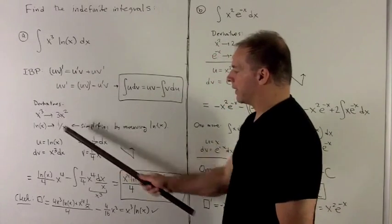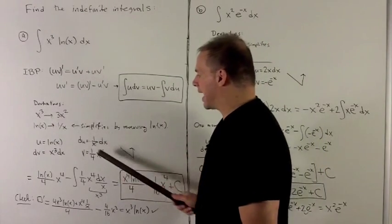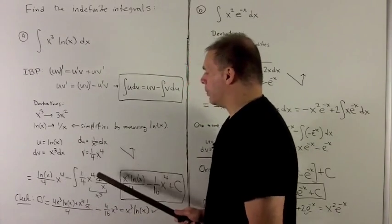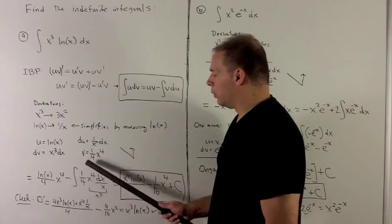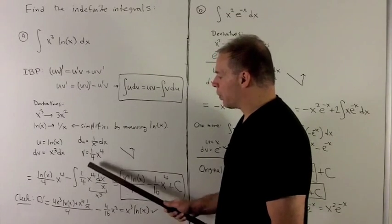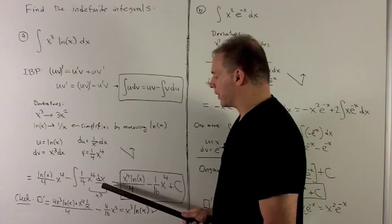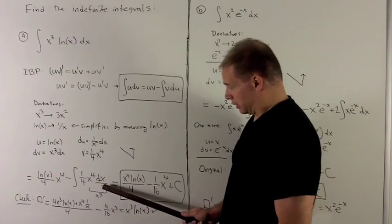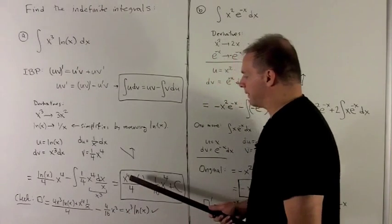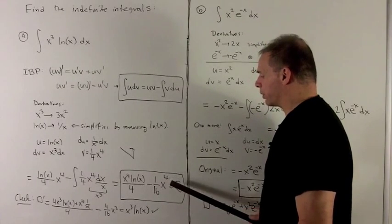The rule says: go down the diagonal, then subtract off and integrate up. Going down the diagonal gives natural log of x times x to the 4th over 4. Integrating up gives the integral of one-fourth x to the 4th over x dx, which simplifies to one-fourth x cubed. The antiderivative of x cubed gives another one-fourth x to the 4th. Putting it together: x to the 4th times natural log of x over 4 minus 1/16 x to the 4th plus C.